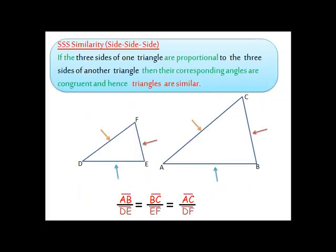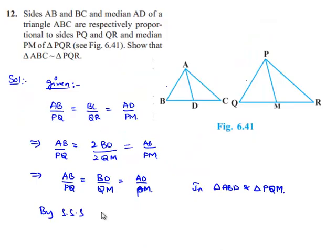So by SSS similarity we can say triangle ABD is similar to triangle PQM.